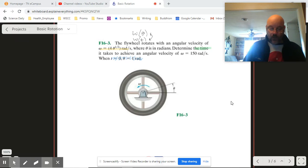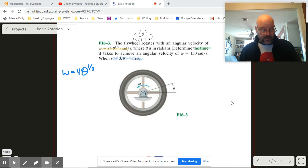We begin with omega itself. Oh, that's too big. We begin with omega and it's 4 root theta. We've got that for sure.